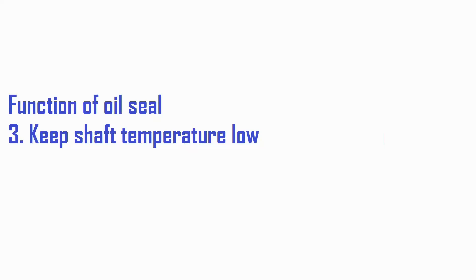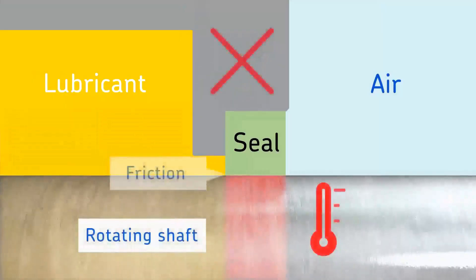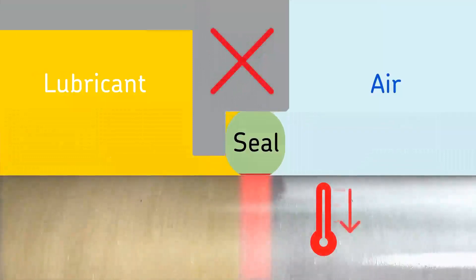The third function of the oil seal is to keep the shaft temperature cool even though the oil seal is constantly rubbing against the rotating shaft. The oil seal is designed to minimize friction by minimizing the contact between the seal lip edge and the shaft so that the temperature remains cool.